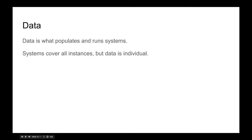Now we've covered most of the big stuff on systems. Notice something we haven't mentioned once — numbers. We've talked about attributes but not the actual numbers of those attributes. That's where data comes in. Data is what populates and runs the systems. Systems cover all instances — all cows have milk production, all cows eat grass, all cows have stamina. Data determines which cows are better at milk production, have more stamina, eat more grass. That's the difference between systems and data.